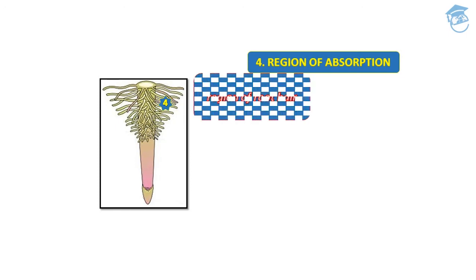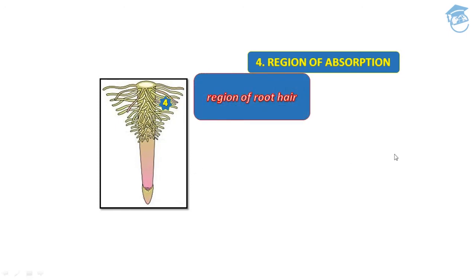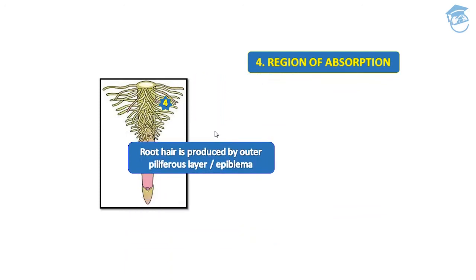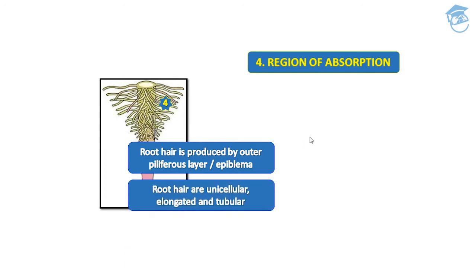The fourth region is the region of absorption — it is the region of root hair. Epidermal hairs, which we call root hair, are produced by the outer piliferous layer, also called epiblema. Root hairs are unicellular, elongated, and tubular. Their function is to help in absorption of water and minerals.